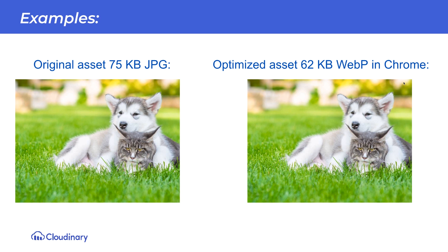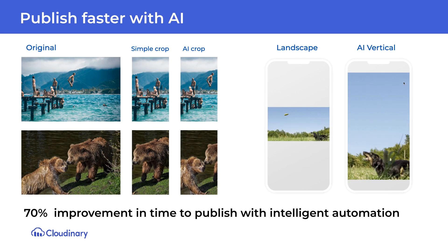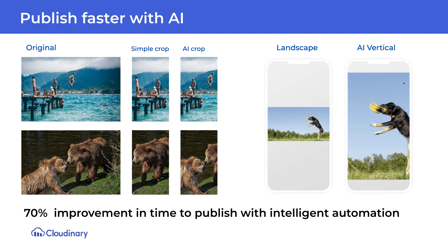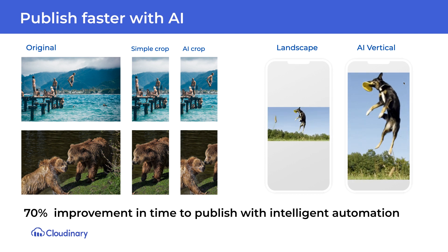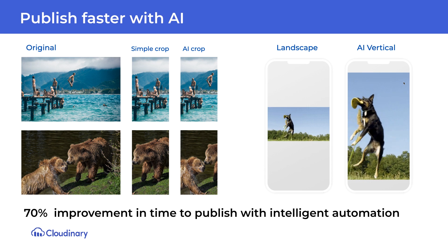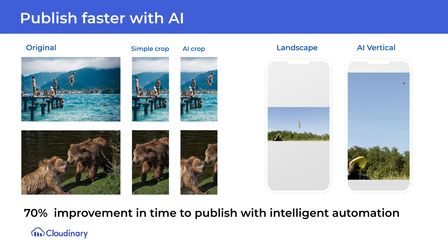The first image is 75 kilobytes in JPEG, and the delivered version is 62 kilobytes in WebP for Chrome. It may not seem like much, but if you have a page that is rich with many pieces of content, having it be lighter and load faster is super important. Next, count on automated gravity to find the most interesting part of an image or video, so no matter what aspect ratio you are delivering, the crop will show the content you intended for your user.